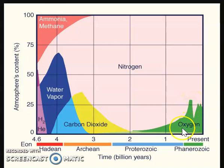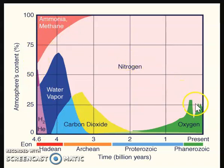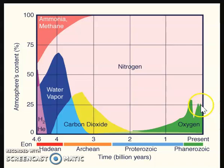That brings us to where we are today. Carbon dioxide and water vapor are in very small amounts in the atmosphere. We have very little hydrogen, helium, ammonia, and methane. We have a very high amount of nitrogen (N2), which is a very stable gas at about 80% of our atmosphere.